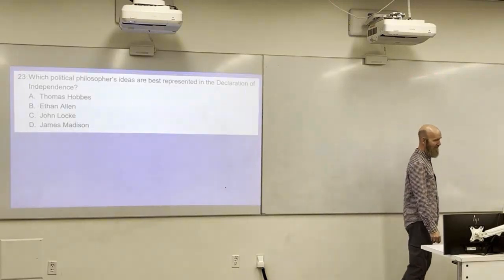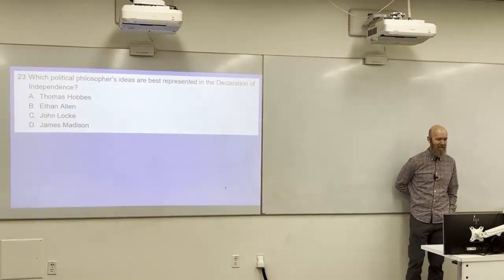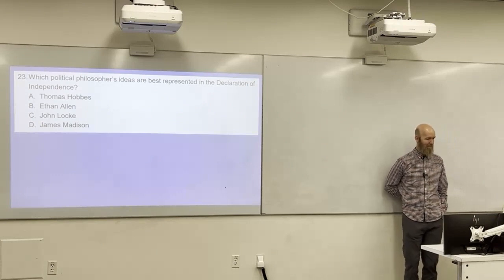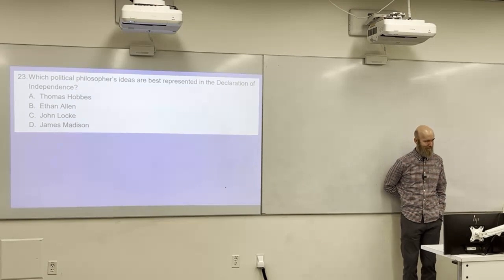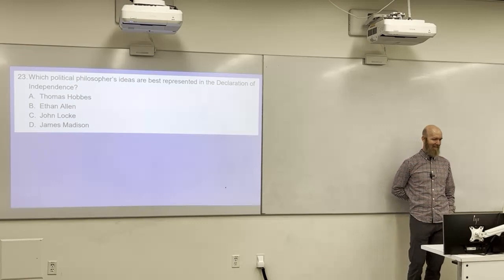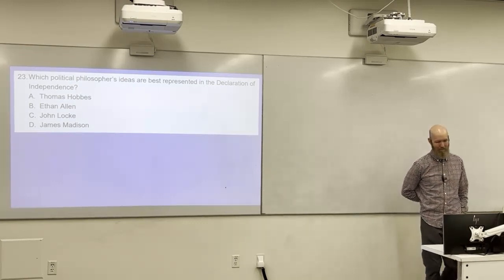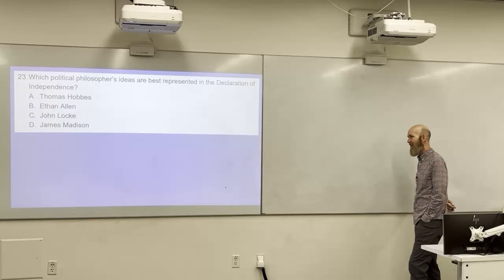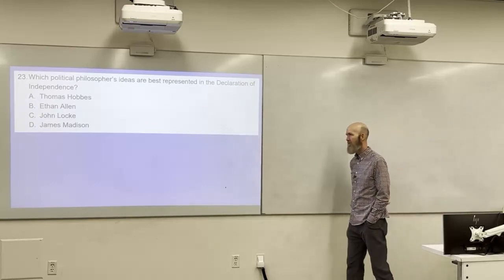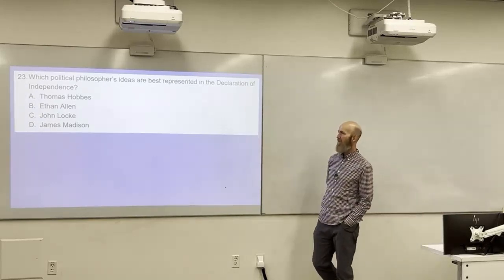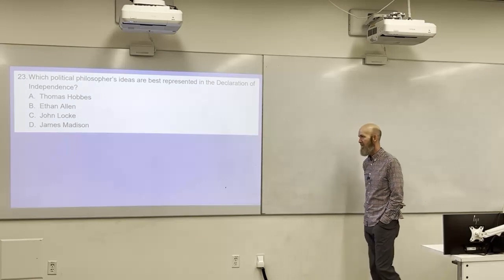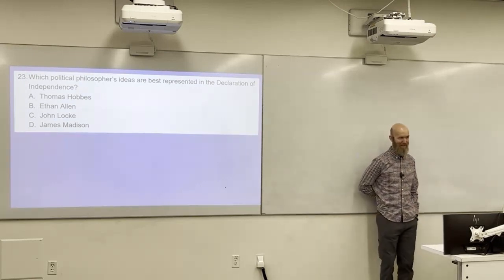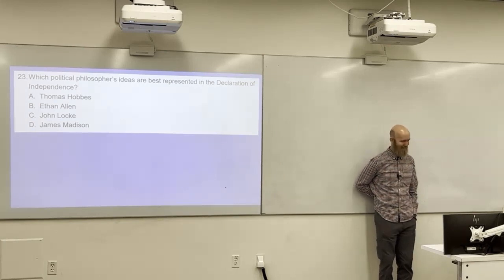Which political philosopher's ideas are best represented in the Declaration of Independence? A: Thomas Hobbes. B: Ethan Allen. C: John Locke. D: James Madison. The answer is C — John Locke. John Locke wrote about natural rights and the ability of people to create or change their governments, which is the core of the Declaration of Independence. And remember: the philosopher who wrote about separation of powers was Montesquieu.